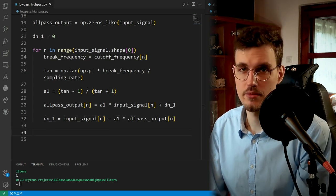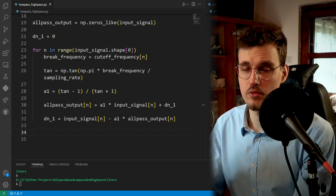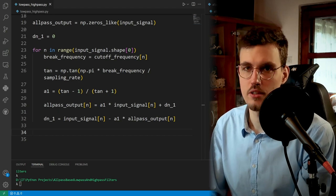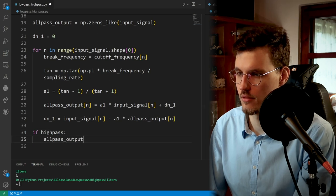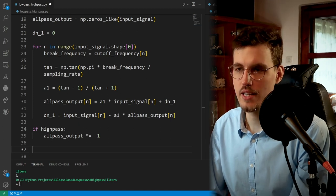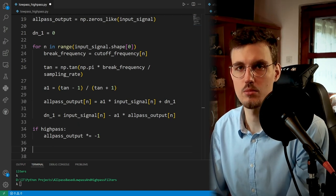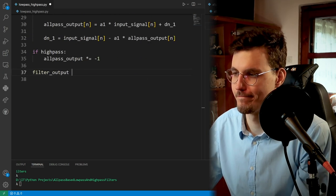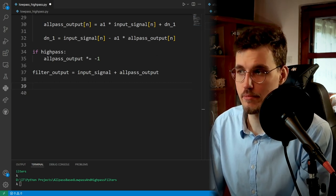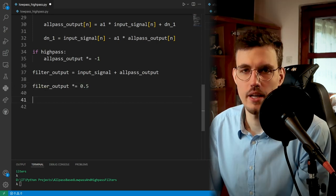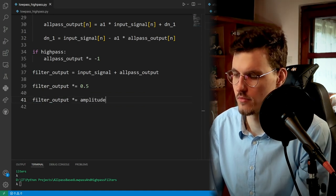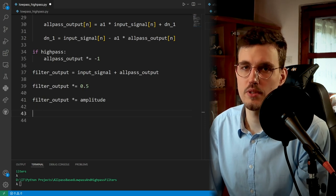Okay, that's it. That's our all-pass filter processing. We now need to add the output of the all-pass filter to the direct path for the low pass or subtract it for the high pass. So we can write... And now we can add the all-pass output to the direct path and we'll get a high pass filter if we set the high pass variable to true. Now we'll scale the amplitude of our output signal by half so that we don't clip. And finally, we scale our signal by the desired amplitude.